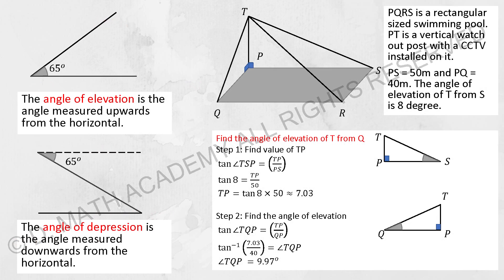The next part we have angle of elevation and angle of depression. This is what it was referring to. So PQRS is a rectangular swimming pool. PT is a vertical watch point for CCTV installed on it.